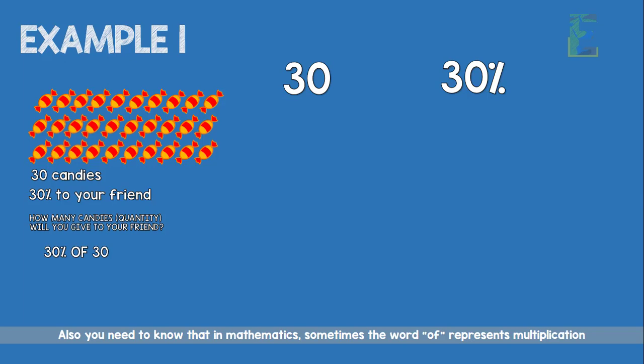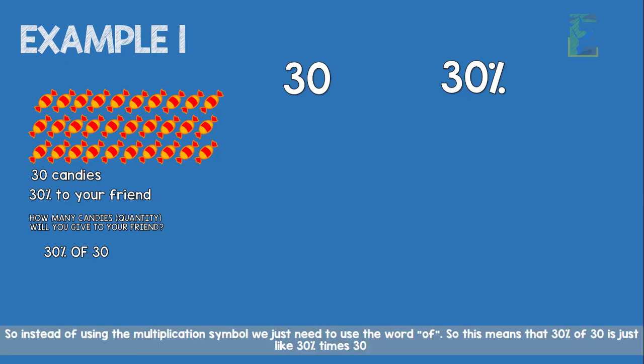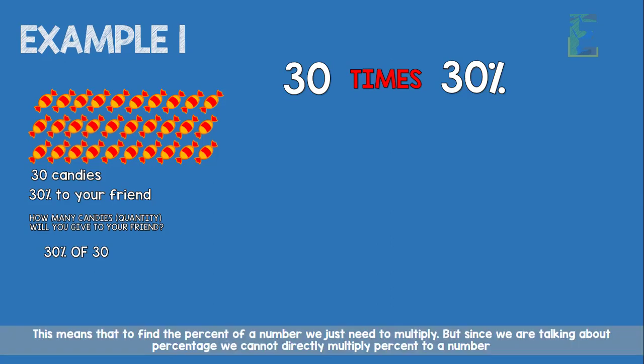Also, you need to know that in mathematics, sometimes the word 'of' represents multiplication. So instead of using the multiplication symbol, we just use the word 'of'. So this means that 30% of 30 is just like 30% times 30. This means that to find the percent of a number, we just need to multiply.